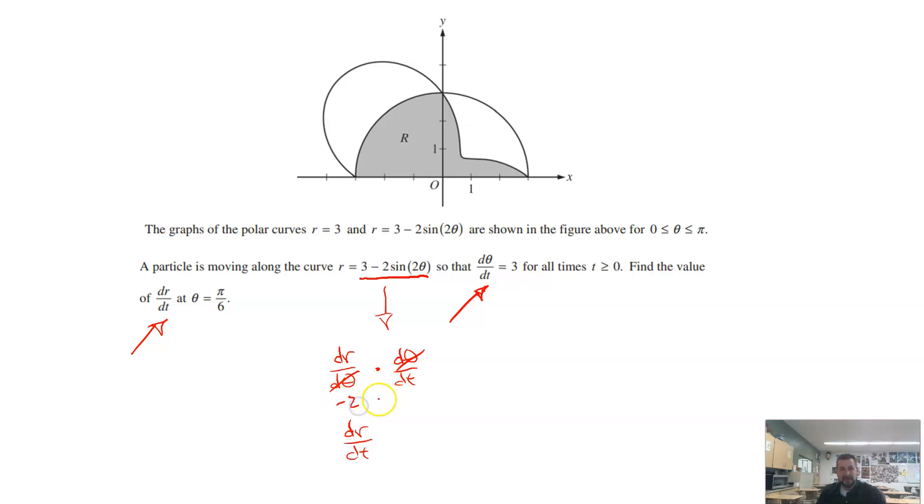When I do that, I actually get negative 2. And d theta dt, I just used my calculator. I just took the derivative and plugged in pi over 6. And then d theta dt is always 3. So negative 2 times 3 is negative 6. That's your correct answer for letter D.